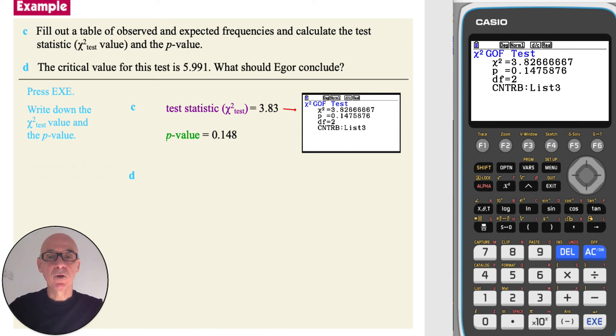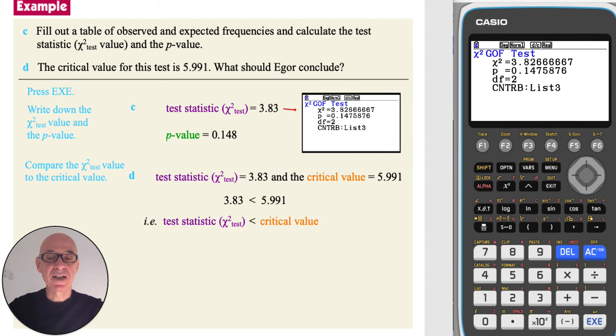In part D, we're asked what should Igor conclude? So as the critical value has been given in the question, we can compare the test statistic to the critical value. And as 3.83 is less than 5.991, in other words as the test statistic is less than the critical value, we conclude that there is insufficient evidence to reject the null hypothesis H₀, so we accept it.